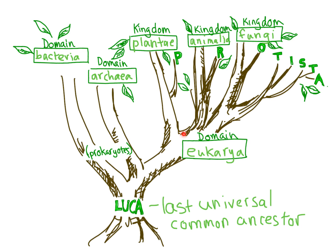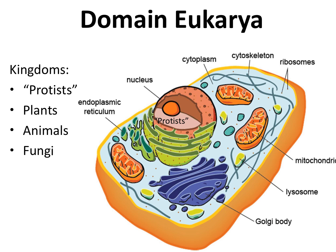Next stop, Domain Eukarya. If an organism belongs to the Domain Eukarya, then it is a eukaryote. It has a cell membrane containing many other membrane-bound organelles, such as a mitochondrion or a Golgi apparatus that have membranes around the outside. Most notably, there is a nucleus with a nuclear envelope, or nuclear membrane, that surrounds the DNA. Within the Domain Eukarya, there are many protistin kingdoms, as well as the kingdoms for plants, animals, and fungi.